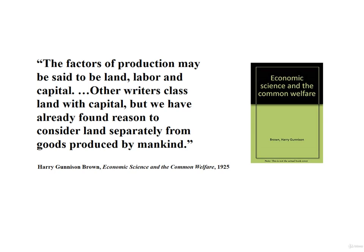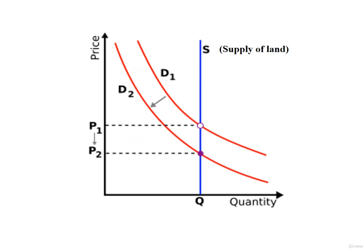Harry Gunnison Brown explained: 'The factors of production may be said to be land, labor, and capital. Other writers class land with capital, but we have already found reason to consider land separately from goods produced by mankind.' Among economists today, there are some who do argue that land must be treated as a distinct factor of production and that land markets operate quite differently from markets for labor and capital goods. A key difference is that the supply of land is fixed by nature — that is, its supply is inelastic. Changes in the market price for land will not result in an increase in the total supply. This is reflected on a supply-demand chart by a vertical supply curve.